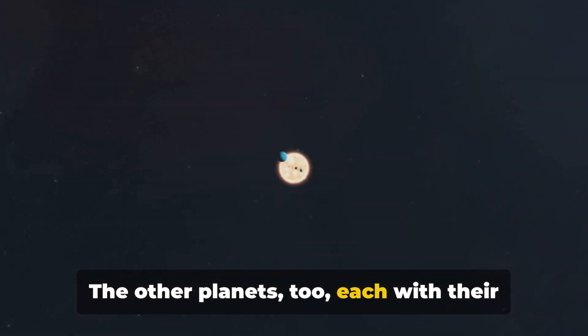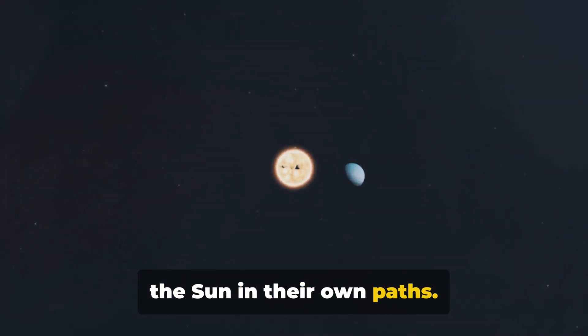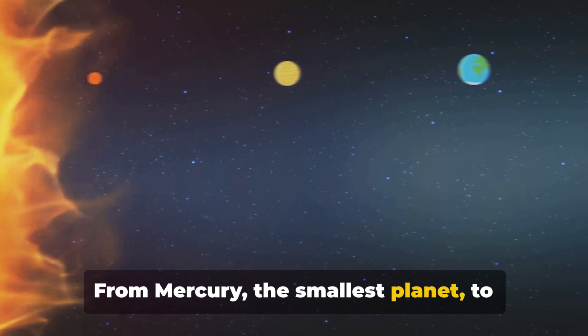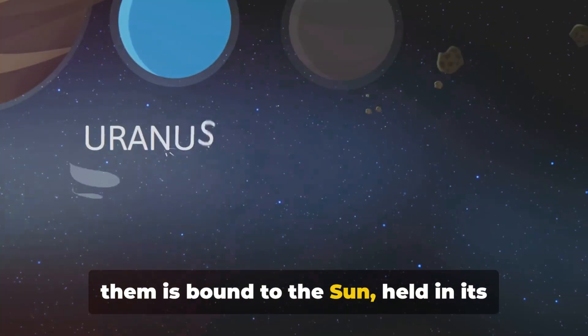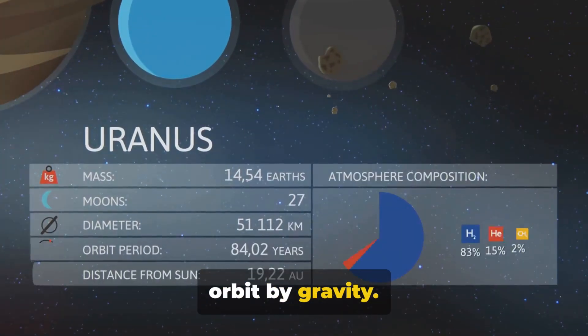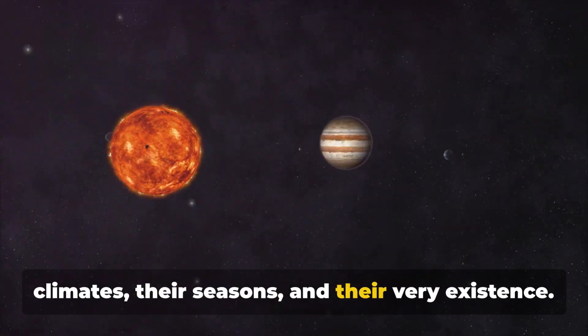The other planets too, each with their unique characteristics and quirks, orbit the sun in their own paths. From Mercury, the smallest planet, to Jupiter, the largest, every single one of them is bound to the sun, held in its orbit by gravity. The sun's presence determines their climates, their seasons, and their very existence.